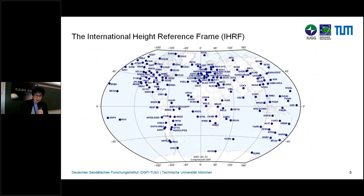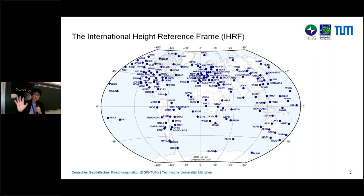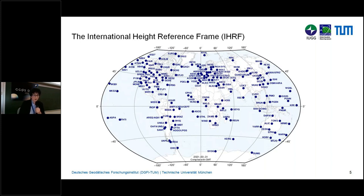This is the global reference network — the core network for the height reference frame, which has about 170 stations. For these stations, we computed the reference coordinates. The idea is that this global reference network is also densified at regional and national levels, just as we do with the ITRF. We have the global network for the ITRF, but we also have regional reference frames, and those regional reference frames provide the basis for national reference frames.